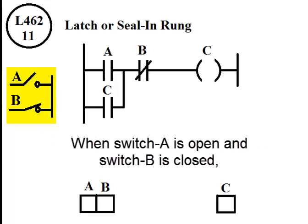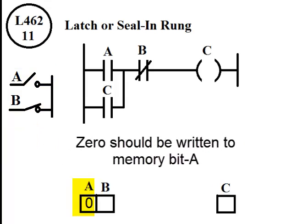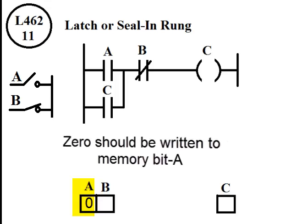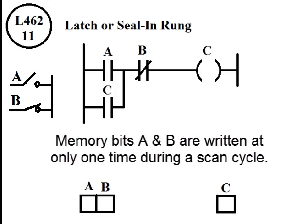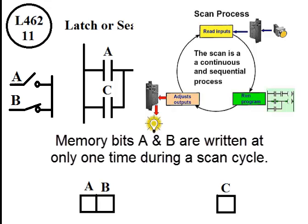When switch A is open and switch B is closed, 0 should be written to memory bit A, and 1 should be written to memory bit B. Memory bits A and B are written only one time during a scan cycle.